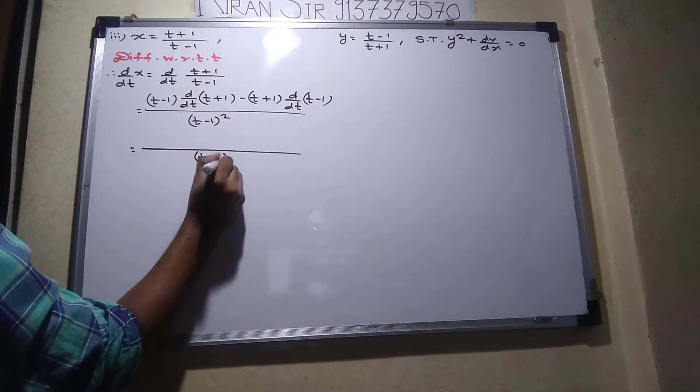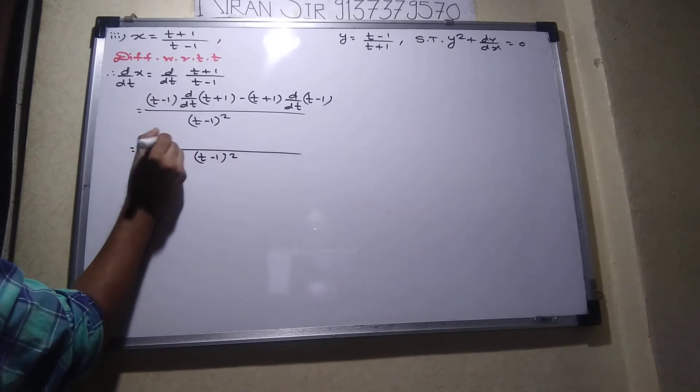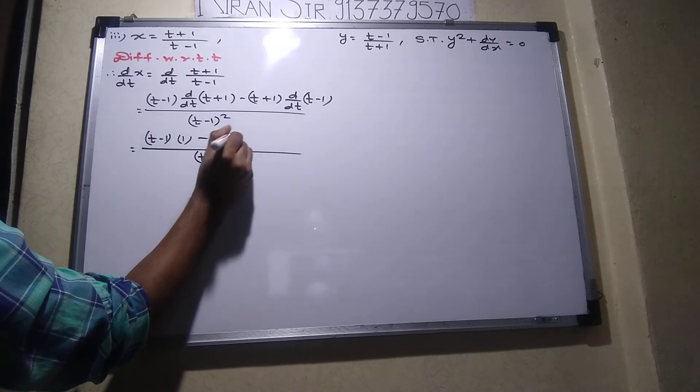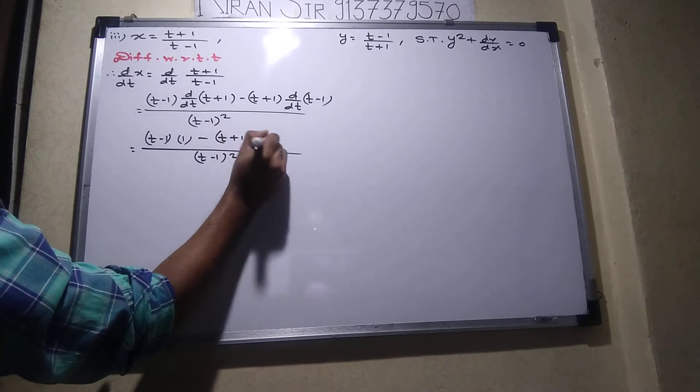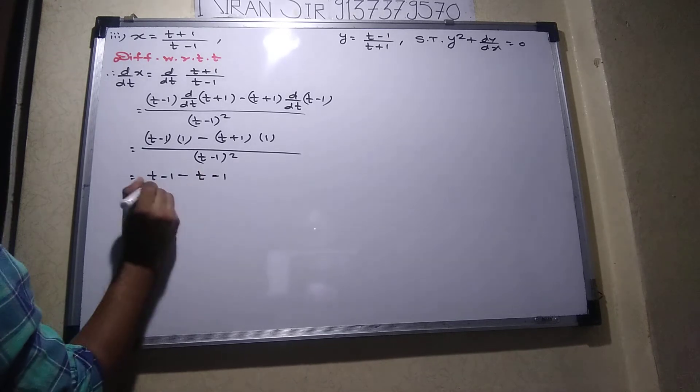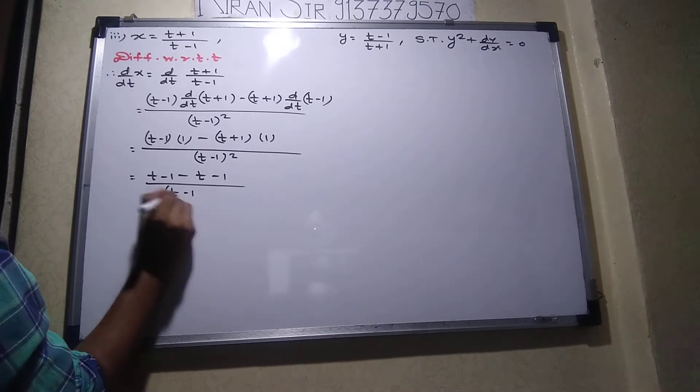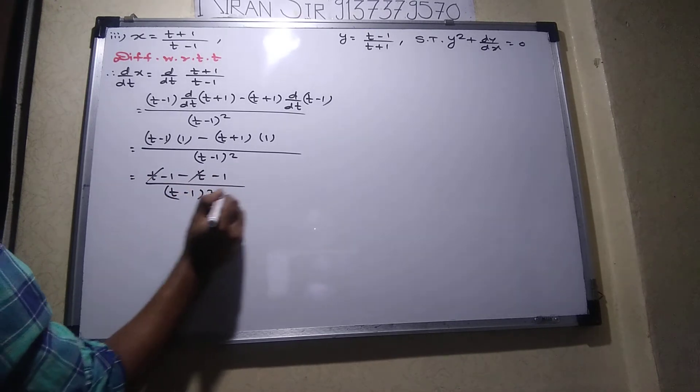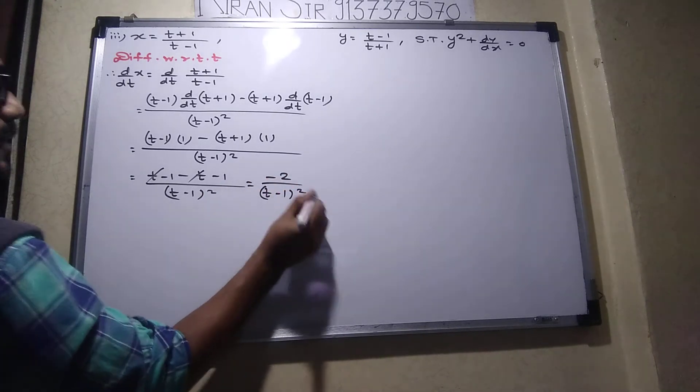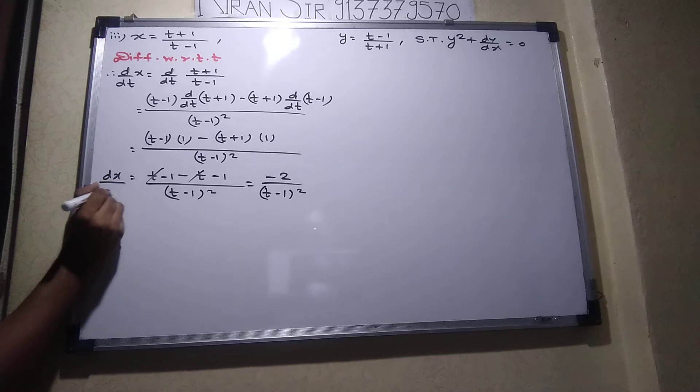Here, t minus 1 the whole square, t minus 1. The derivative of t plus 1 is 1. So let me simplify: t minus 1 minus t minus 1 upon t minus 1 the whole square. So plus t minus t will get cancelled, so minus 2 upon t minus 1 the whole square is the answer of dx by dt.